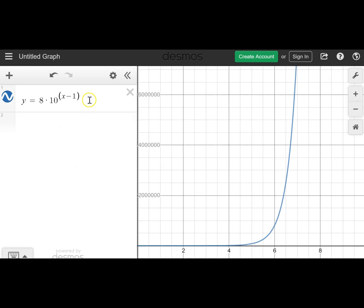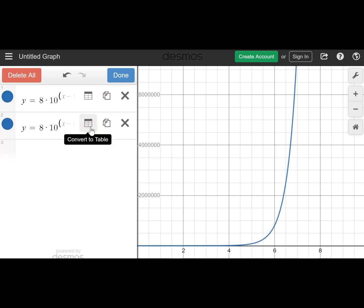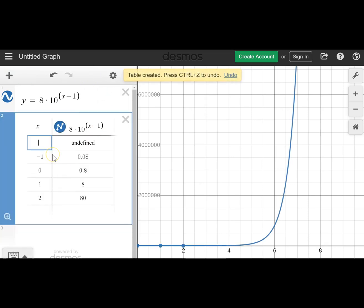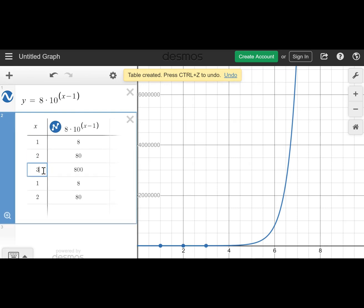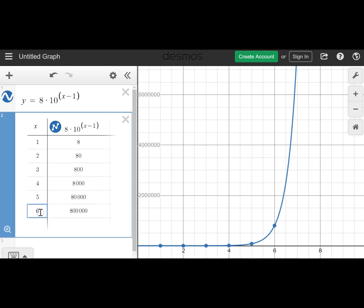The nice thing with Desmos is we can quickly convert this graph to a table. So click on settings, click on duplicate, click on convert to table. And we can use this if we input the same values, one, two, three, four, five, day six, and day seven, to check the table that we generated. We do see that we get the same thing.